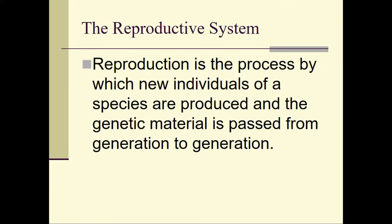By definition, reproduction is the process by which new individuals of a species are produced and the genetic material is passed from generation to generation. Or as I typically say, this is the propagation of the species — making more people.